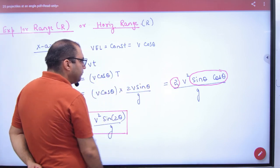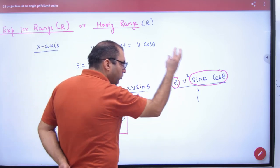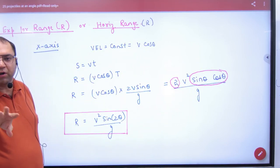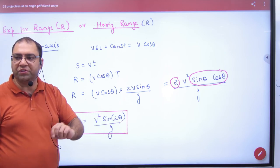So 2 is above. v into v, v square, into sin theta into cos theta. So 2 sin theta cos theta. In math, remember sin of 2 theta. Sin of 2 theta is always equal to 2 sin theta cos theta.